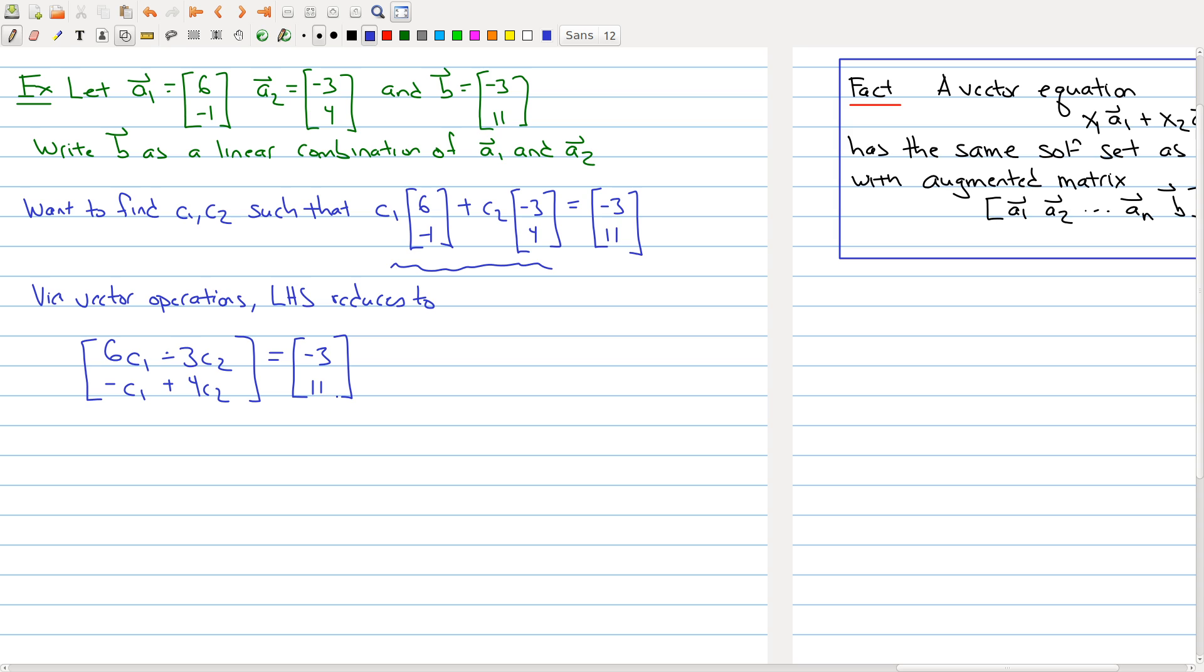But if you step back and stare at this for a second, what we really have here is we get a system of linear equations. What system of linear equations are we looking at? Well we're getting the system that says 6c₁ - 3c₂ = -3, and my second equation is -c₁ + 4c₂ = 11.